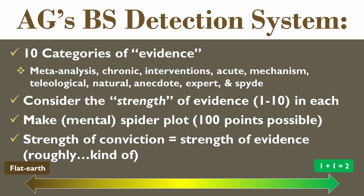I have about 10 different types of evidence that I consider. Once I do that, I go through the strength of each and give it a mental score of one to ten. So ten types, one-to-ten score — it's a 100-point scoring system. Then I make a mental spider or radar plot, and the strength of my conviction is based on the strength of the evidence. Something scoring 100 out of 100 is very green; something scoring 20 out of 100 is probably yellowish-brown.